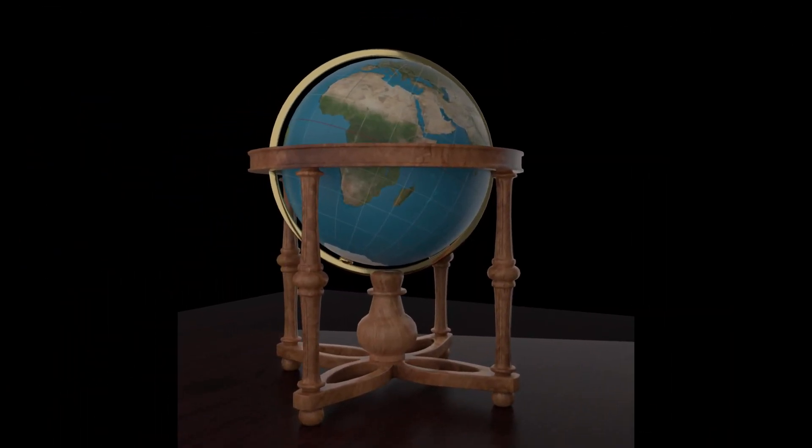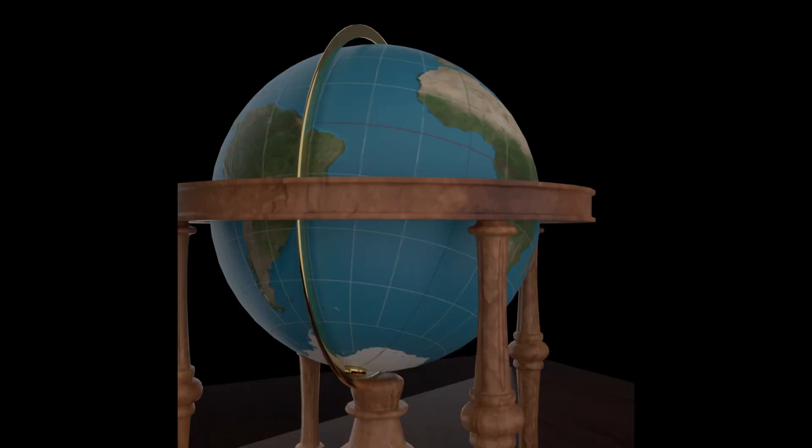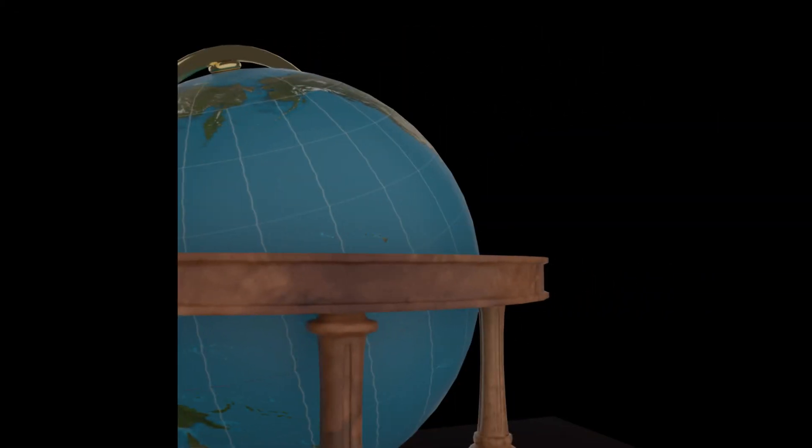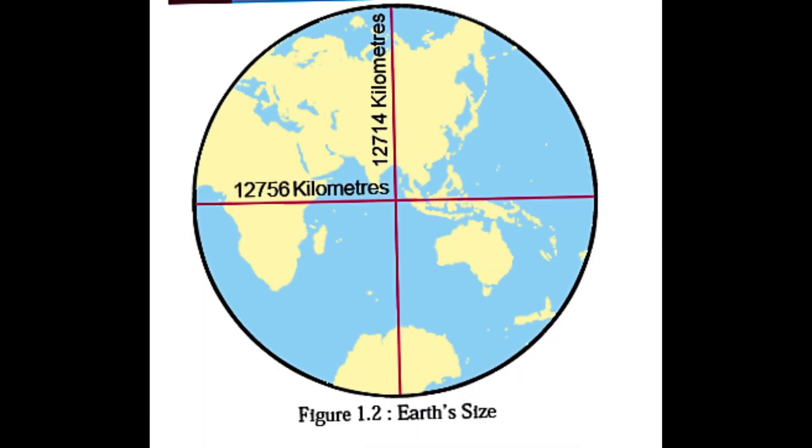If you observe a globe, you can see some vertical and horizontal lines on it, with different numbers. Will you ever think about it? These lines and numbers help us find the location on the earth. In this picture, you can see the length of the earth and get the idea about the size of the earth.